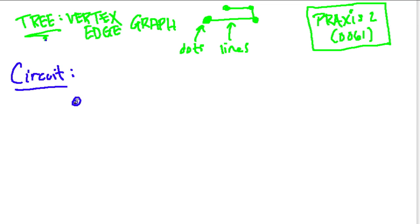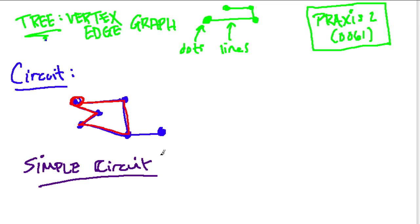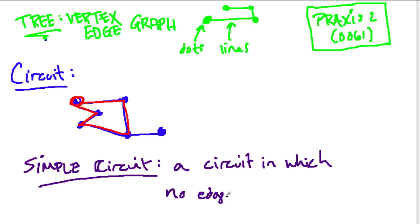A circuit would be: you start at a vertex, you go on a path, and you come back to the same vertex — you complete the circuit. Now, there are different types of circuits. In general, a circuit exists, but a simple circuit is when you can start and end at the same vertex without repeating an edge. So it's a circuit, just like the one I showed you here, in which no edge is repeated.